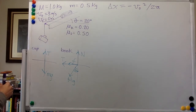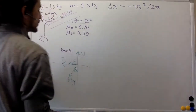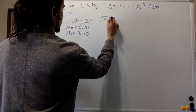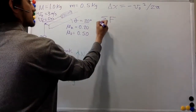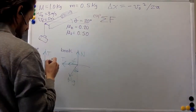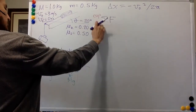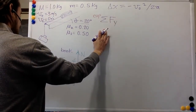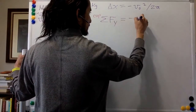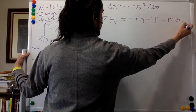We have a number of equations. We can go from the free body diagram to Newton's second law directly. Sum of forces in y for the cup equals minus mg plus T, which equals mass times acceleration of the cup in the y direction.